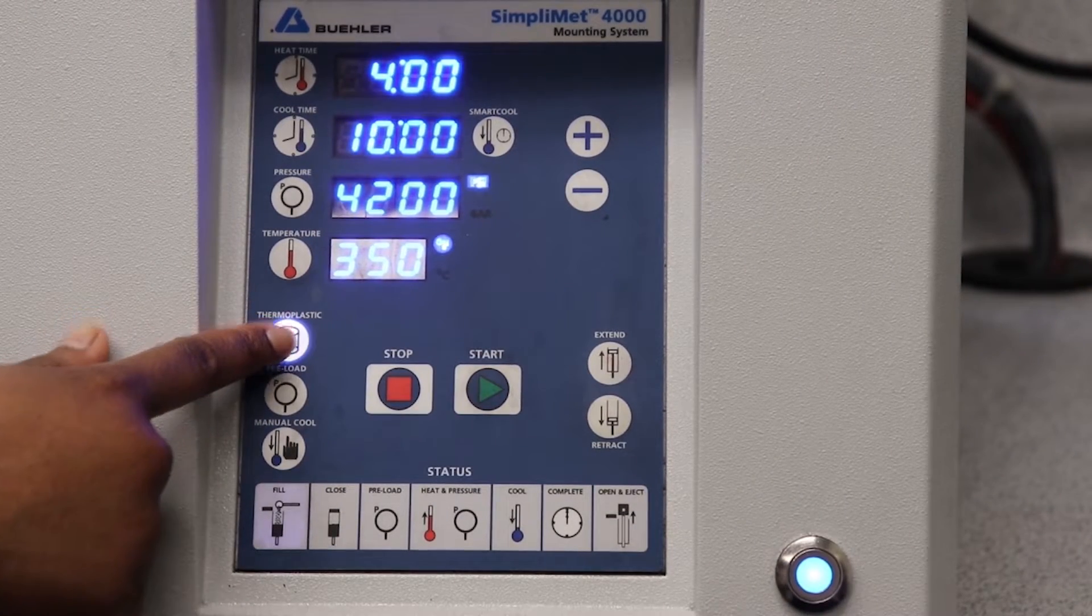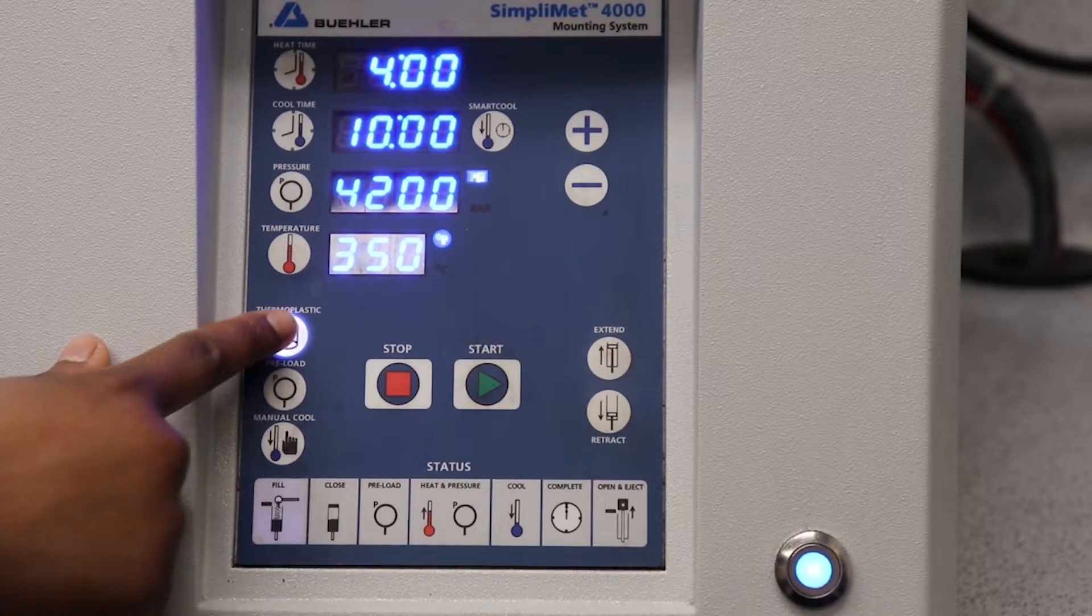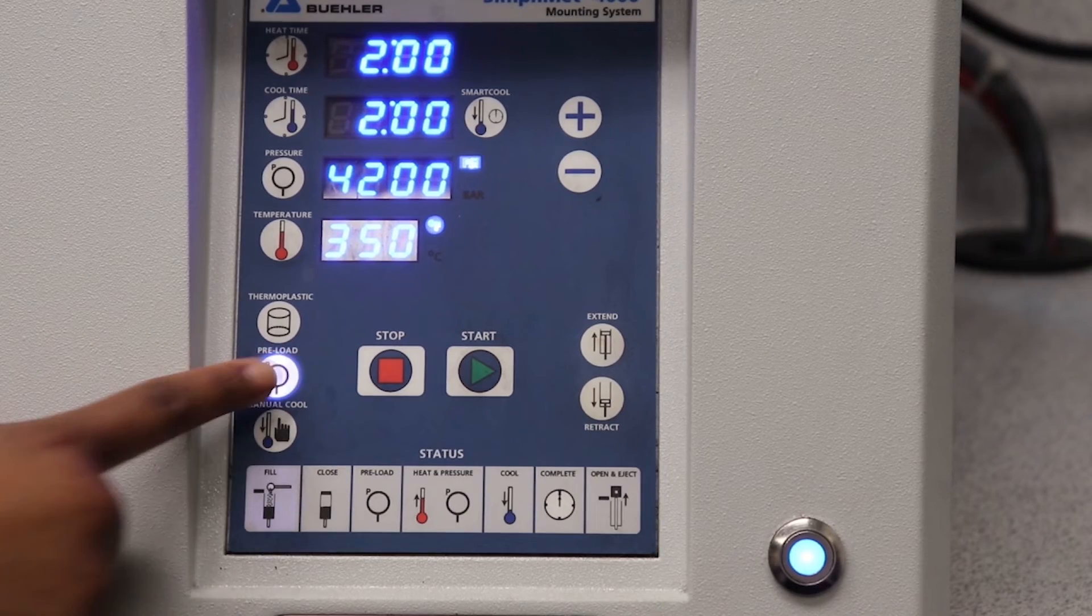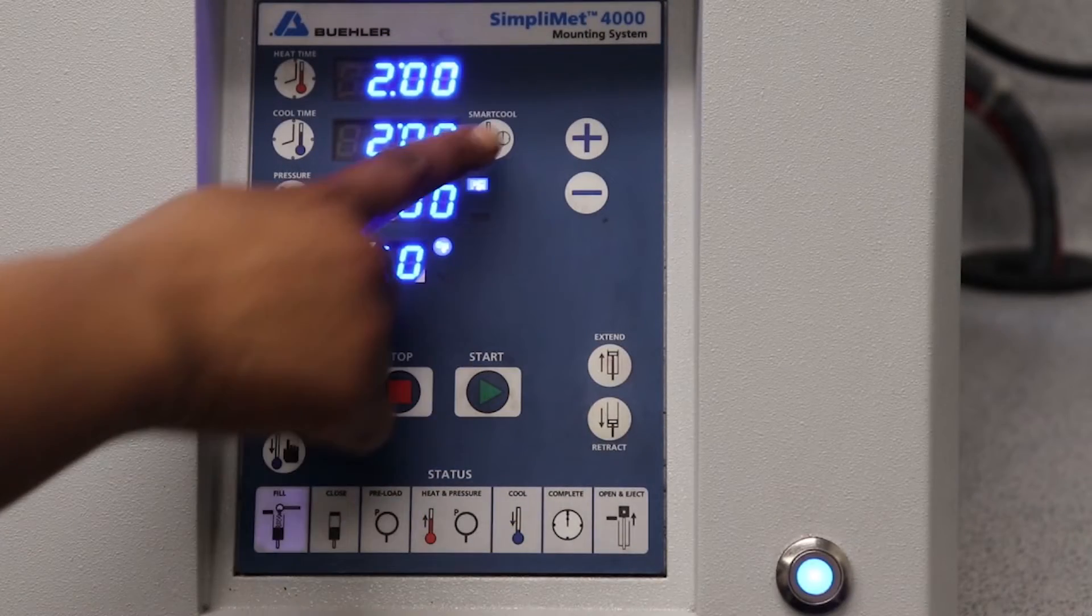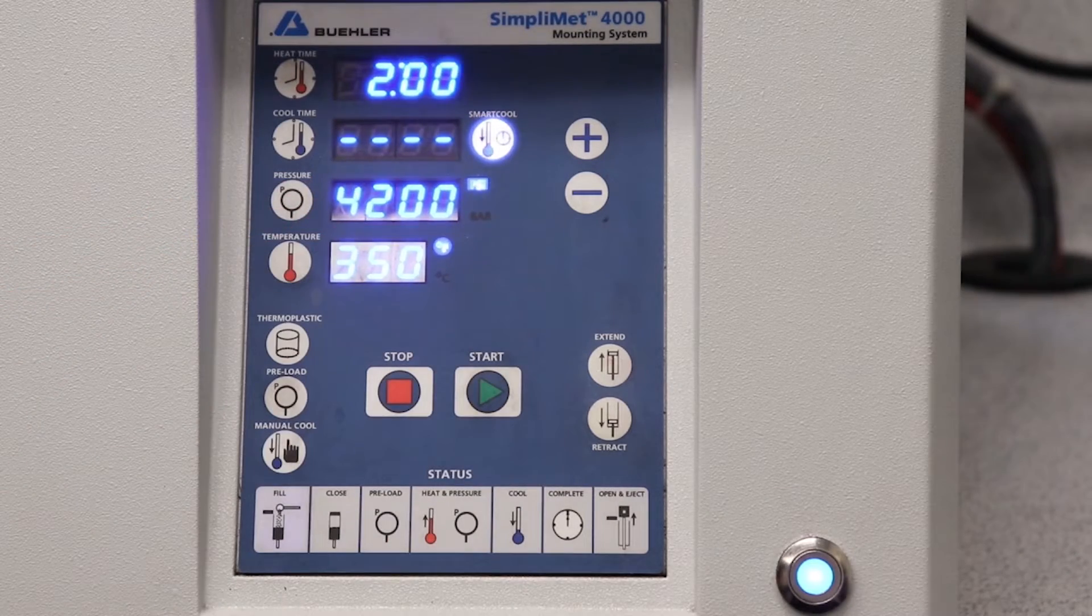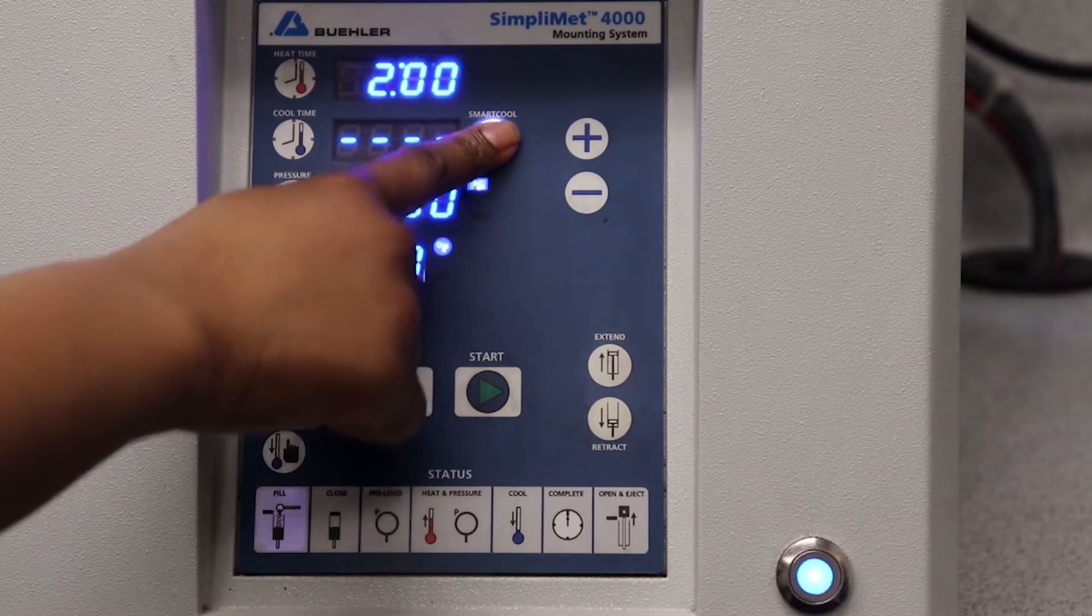The thermoplastic button is a button that retains variables for thermoplastics and inhibits the use of smart cool. The preload button applies a smaller pressure prior to applying the entire load. And the smart cool button is a function used to cool samples to a temperature where samples can be handled by hand.